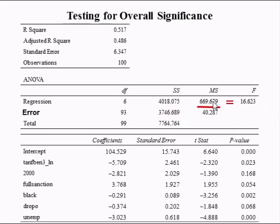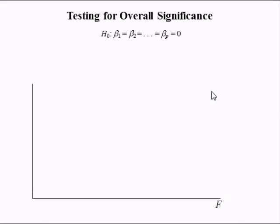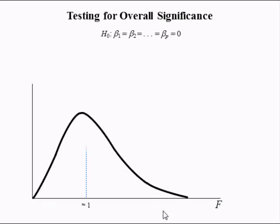The F-stat is found by dividing the mean square due to regression by the mean square due to error. The null hypothesis is that all slope coefficients are simultaneously equal to 0. Because F-statistics are ratios of estimates of variance, and variances are always positive, the F-distribution is over all positive values — it goes from 0 to infinity. The mean of an F-statistic is approximately equal to 1 if the null hypothesis is true.